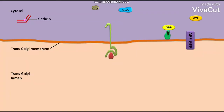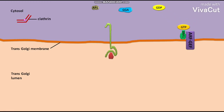The trans-Golgi membrane contains an inactive GTP binding protein ARF1 with bound GDP. This ARF1 initiates the formation of a clathrin coated vesicle on the trans-Golgi membrane. The inactive ARF1-GDP binds with a specific ARF guanine nucleotide exchange factor, or ARF-GEF. This ARF-GEF then stimulates the exchange of GDP for GTP. Due to this exchange, the ARF1 becomes active.